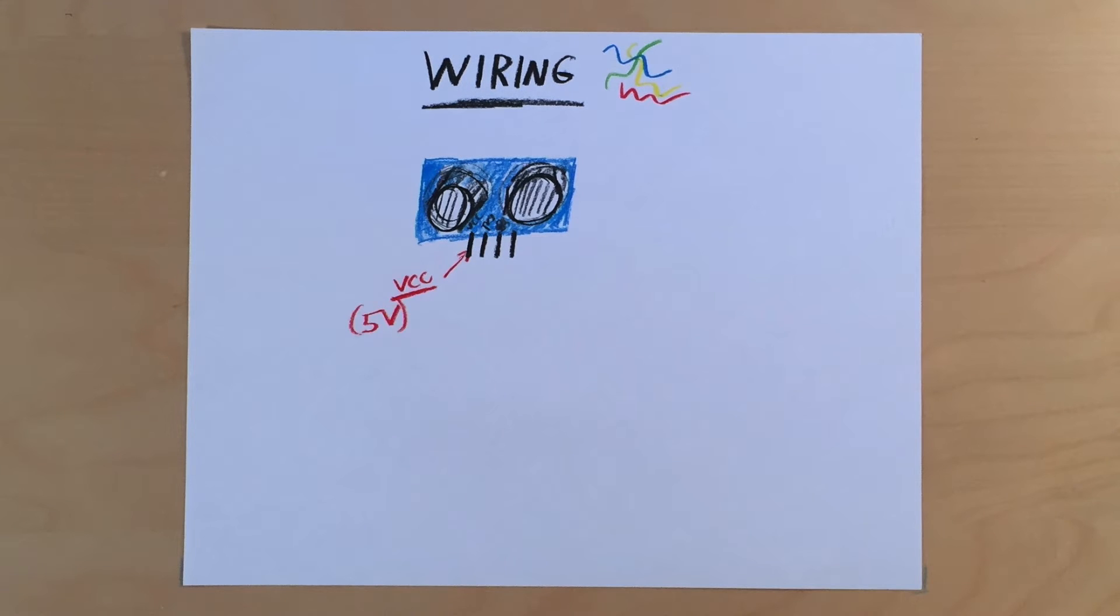Now let's look into the wiring. On the far left we have five volts, we have a trigger pin which triggers the sound wave and an echo pin which receives it, and finally on the far right we have ground.